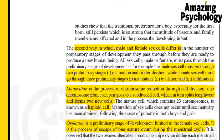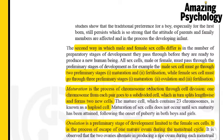The female sex cell goes through three preliminary stages. The first is maturation, the second is ovulation, and the third is fertilization. Let's look at what each of these terms means.